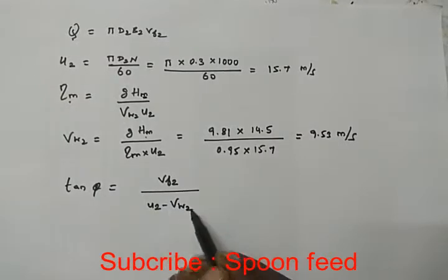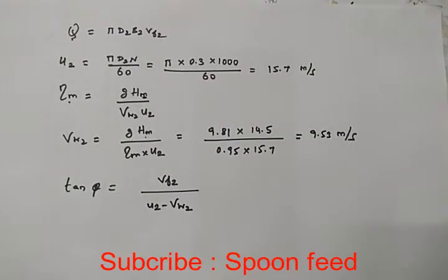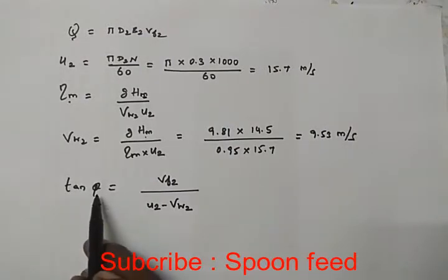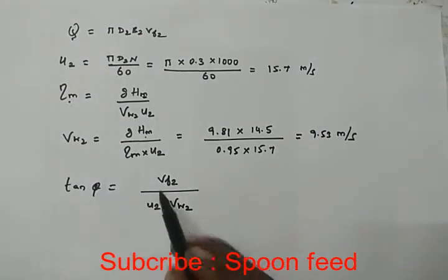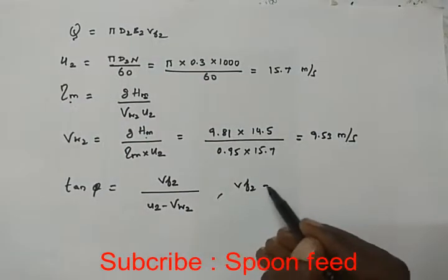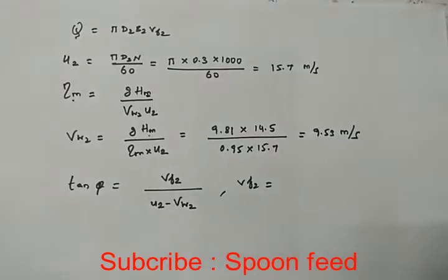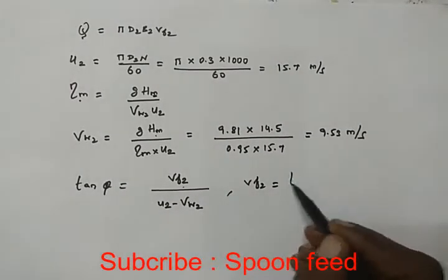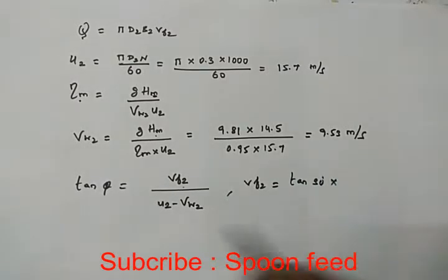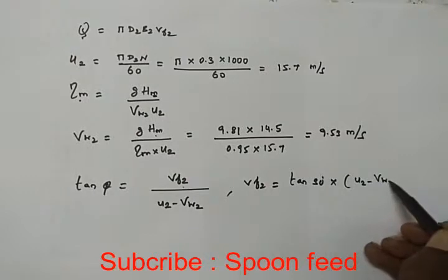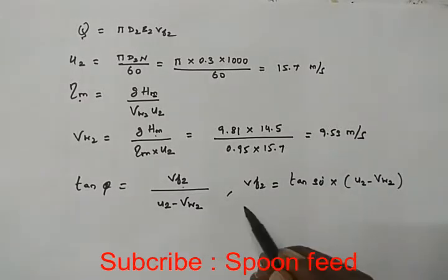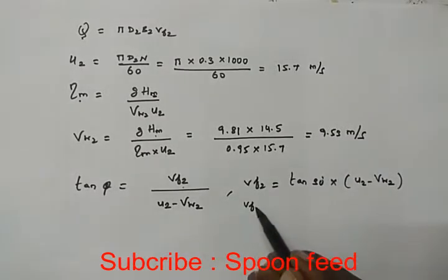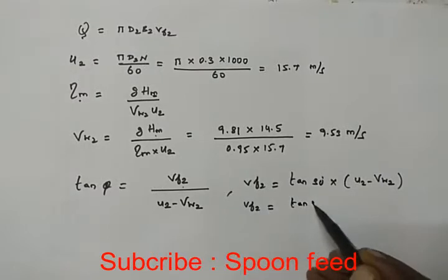We have the van angle at outlet, phi equals 30 degrees. So Vf2 flow velocity at outlet equals tan phi 30 degrees times (u2 minus Vw2). Substituting values: Vf2 equals tan 30 times (15.7 minus 9.53).